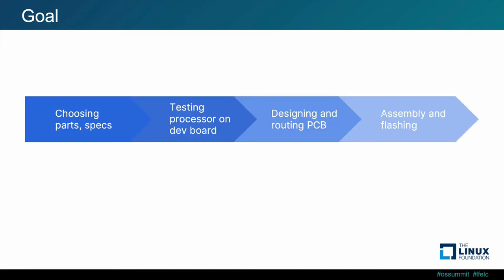Over the course of this presentation we will discuss four different goals. The first goal is choosing the parts and specifications of the PCB including the processor, flash memory, and peripheral devices. The second goal is testing the chosen processor on a development board to ensure the software will cross-compile correctly and be compatible with the processor. The third goal is designing and routing a schematic and its corresponding PCB to produce a board with a business card profile. And the fourth goal is the fabrication of this PCB as well as its assembly and flashing the memory.